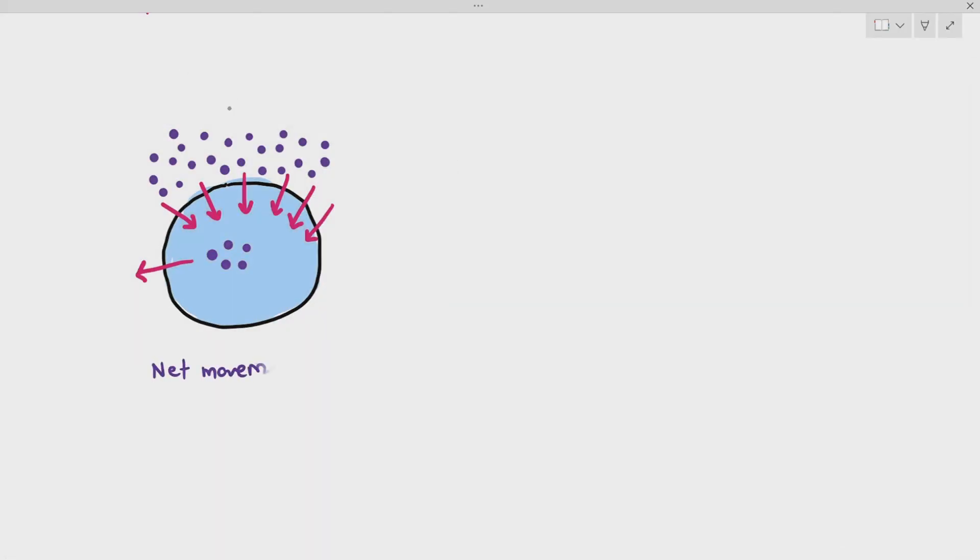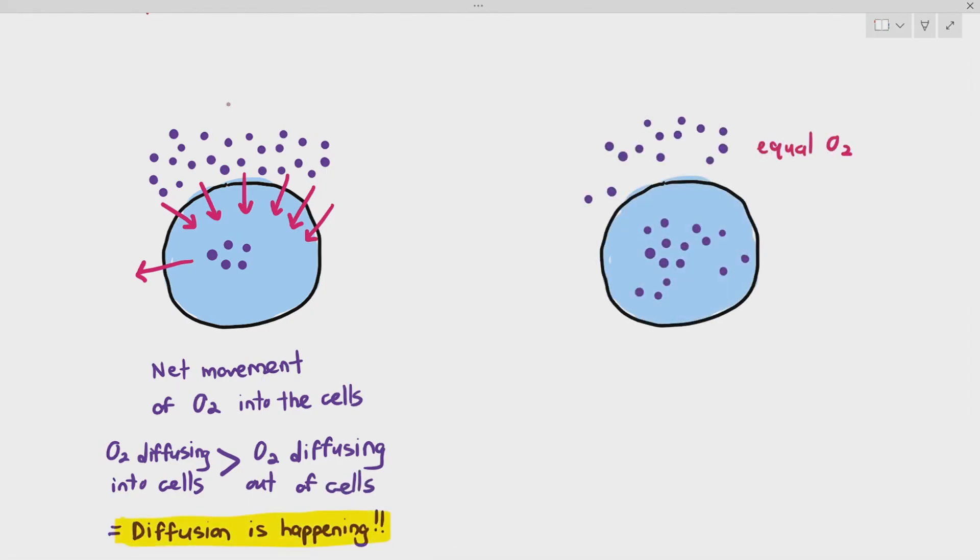It moves from an area of higher concentration to lower concentration. So more oxygen molecules will move into the cell than oxygen moving out of the cell, as I've represented in the arrow.